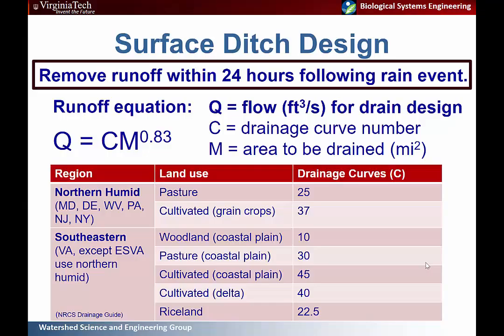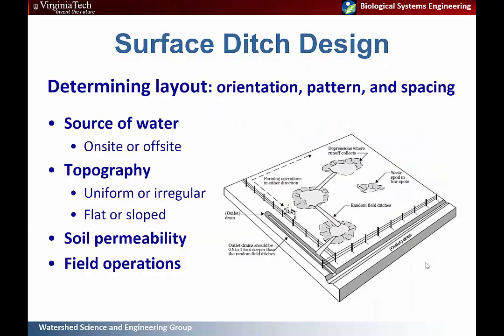The southeastern region uses a finer division of different crop types for this calculation. You also need to determine the layout, orientation, pattern, and spacing of your system. Consider whether the water source is on-site in depressions or off-site flowing from higher upslope areas, the topography, soil permeability, and field operations that might be interrupted by installing ditches. Pictured here is an example of a random layout of ditches connecting surface depressions and feeding to a main drain.